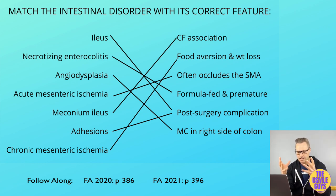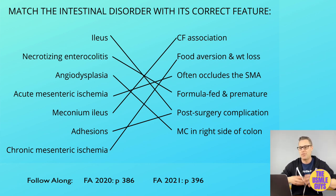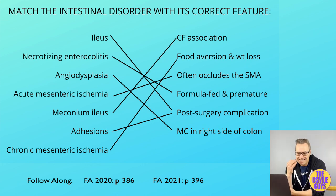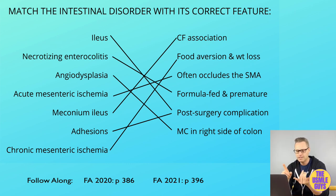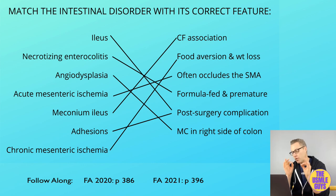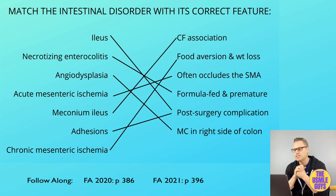Meconium ileus is associated with cystic fibrosis, which causes thickening of secretions. The meconium — the first bowel movement — becomes so thick it plugs the intestines, resulting in inability to pass stool. Necrotizing enterocolitis is seen mainly in premature, formula-fed infants without a mature immune system. Intestinal mucosal necrosis leads to pneumatosis intestinalis, pneumoperitoneum, and portal venous gas, most commonly affecting the terminal ileum and proximal colon.